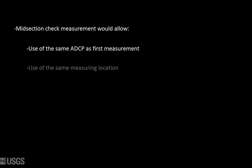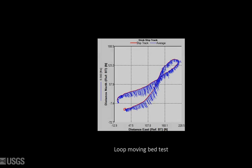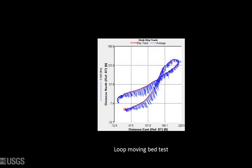A midsection measurement would also allow you to use the same ADCP and likely the same measuring location as the original measurement, if you are limited to only one measuring location. Since bottom tracking isn't necessary, moving bed is not an issue, and moving bed tests are not required.